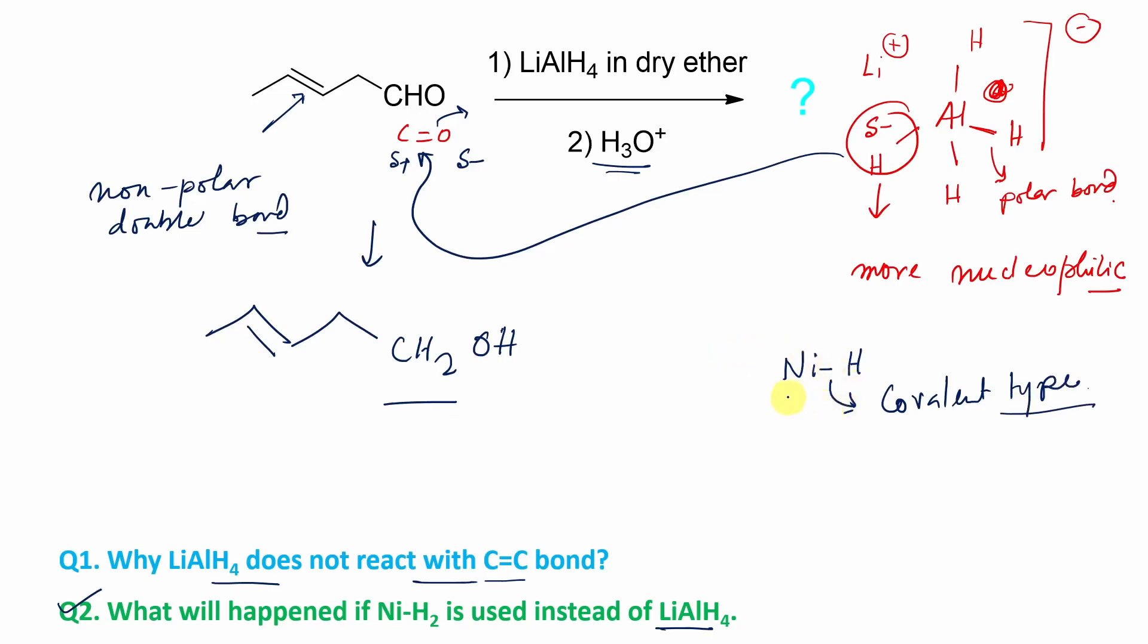But it is moderately reactive, so what it can do is it can reduce both. It is capable to reduce both the carbonyl as well as double bond. So in this case if you take Ni-H2 or Raney nickel instead of lithium aluminum hydride, what will it result? It will end up in CH2OH.